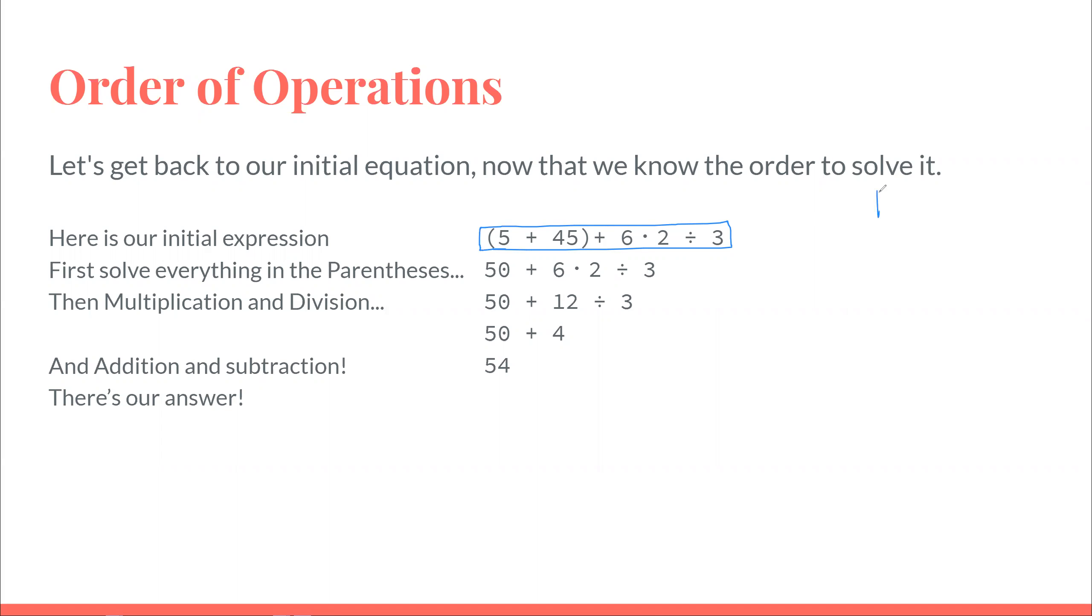This is the initial equation right here. 5 plus 45 in parentheses plus 6 times 2 divided by 3. If you remember, I will just write PEMDAS right here so that you can remember. PEMDAS. So, first, you always have to solve the parentheses. So, you see one parentheses right here. So, you would solve 5 plus 45 first and get 50 right here.